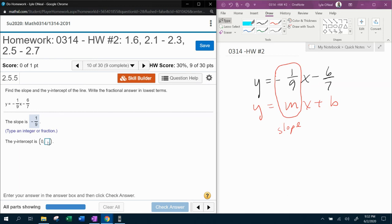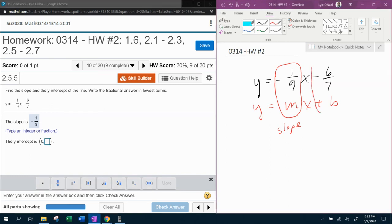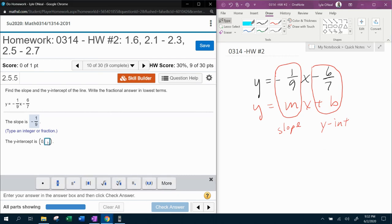And then the y-intercept, notice that they already have the ordered pair for us. Zero comma something. So we just need to come up with the y-intercept part. And so that is the b. This is the y-intercept. And that's negative 6 sevenths, okay? So the y-intercept as an ordered pair would be zero comma negative 6 sevenths.